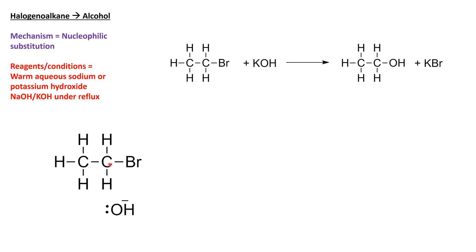Our halogenoalkane has a polar bond here. The carbon is delta positive and the bromide is delta negative, which means our nucleophile hydroxide is able to attack that delta positive carbon and form a bond with the carbon.